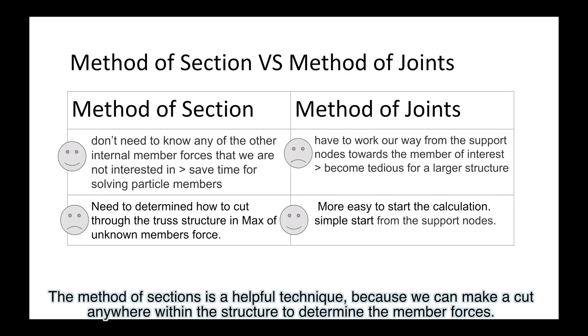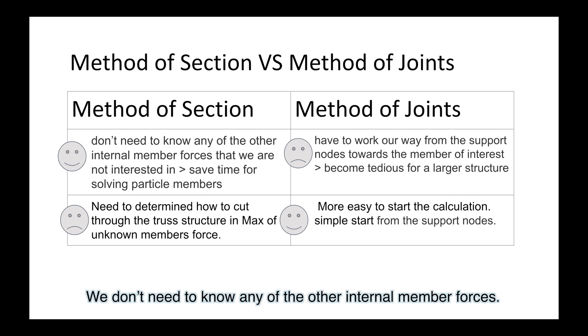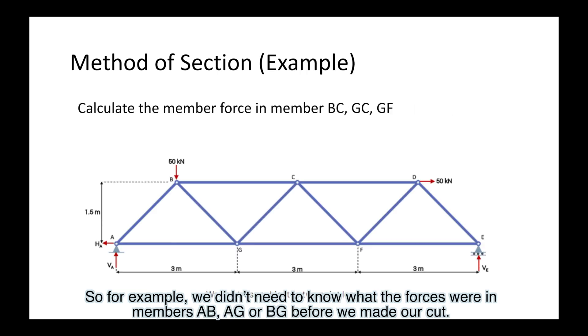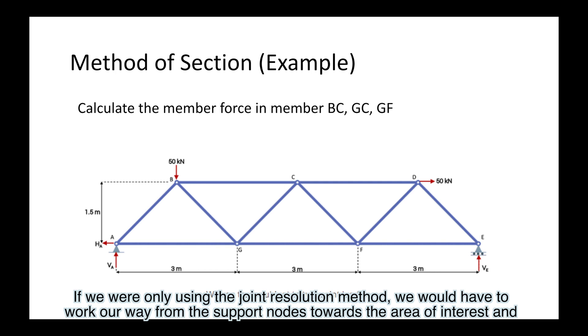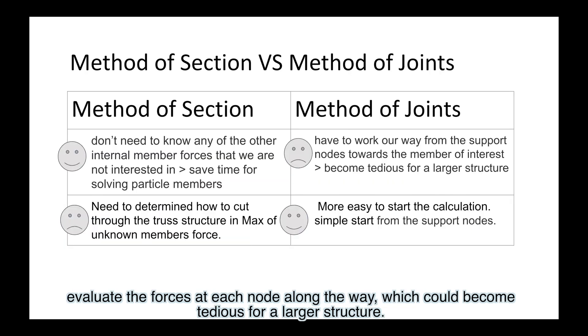The method of sections is a helpful technique because we can make a cut anywhere within the structure to determine the member forces. We don't need to know any of the other internal member forces. So for example, we didn't need to know what the forces were in members AB, AG, or BG before we made our cut. If we were only using the joint resolution method, we would have to work our way from the support nodes towards the area of interest and evaluate the forces at each node along the way, which could become tedious for a larger structure. Thank you for watching.